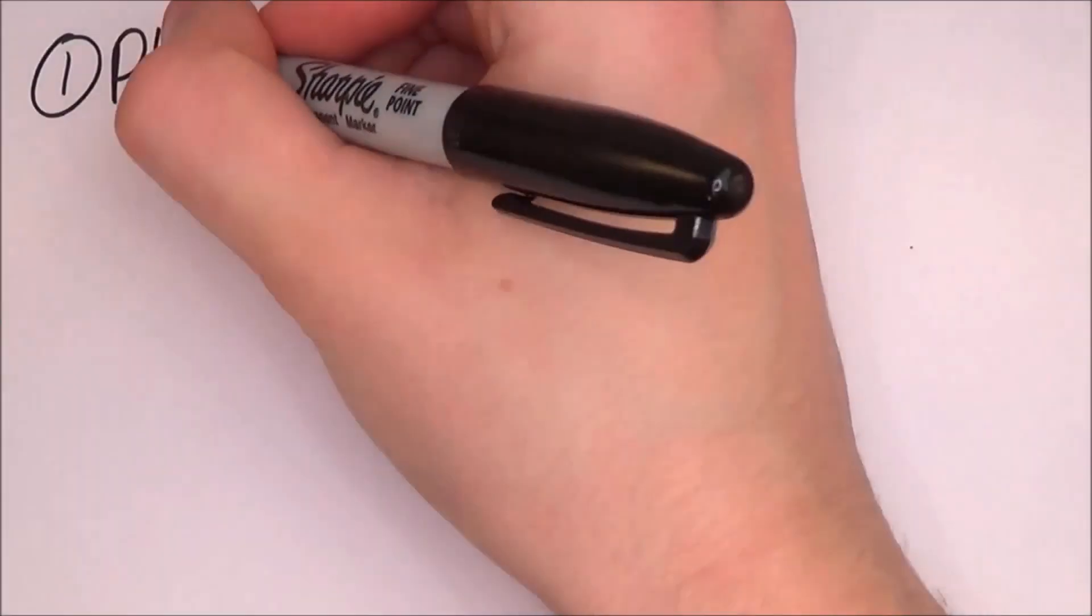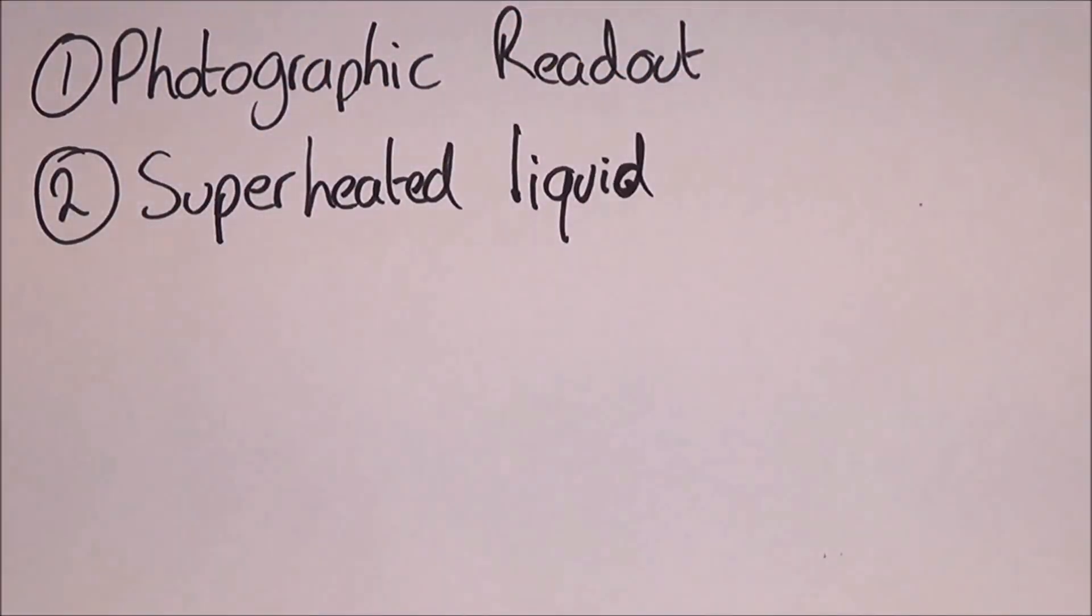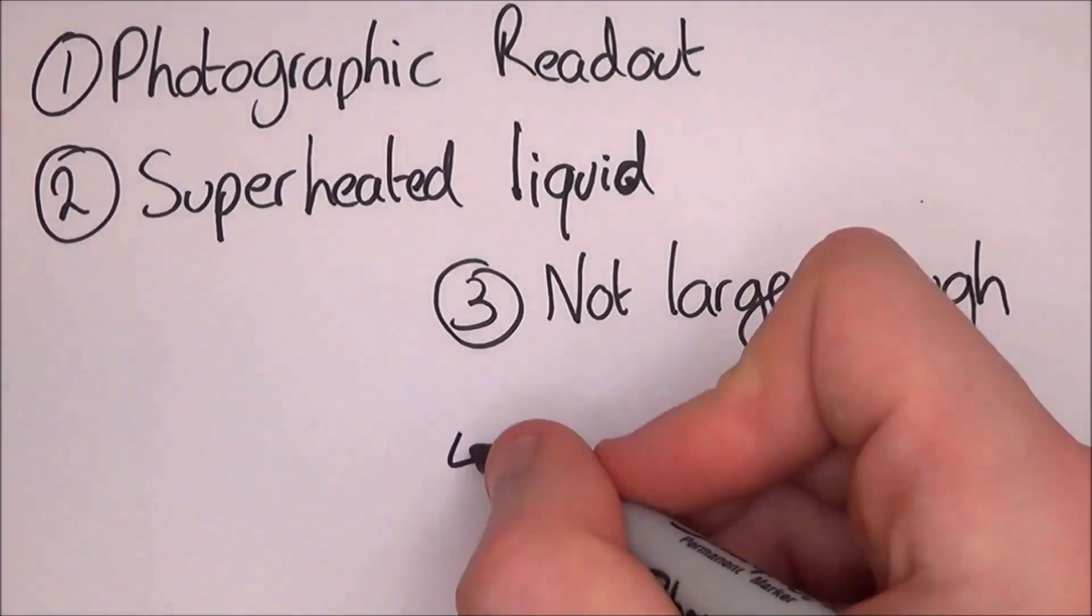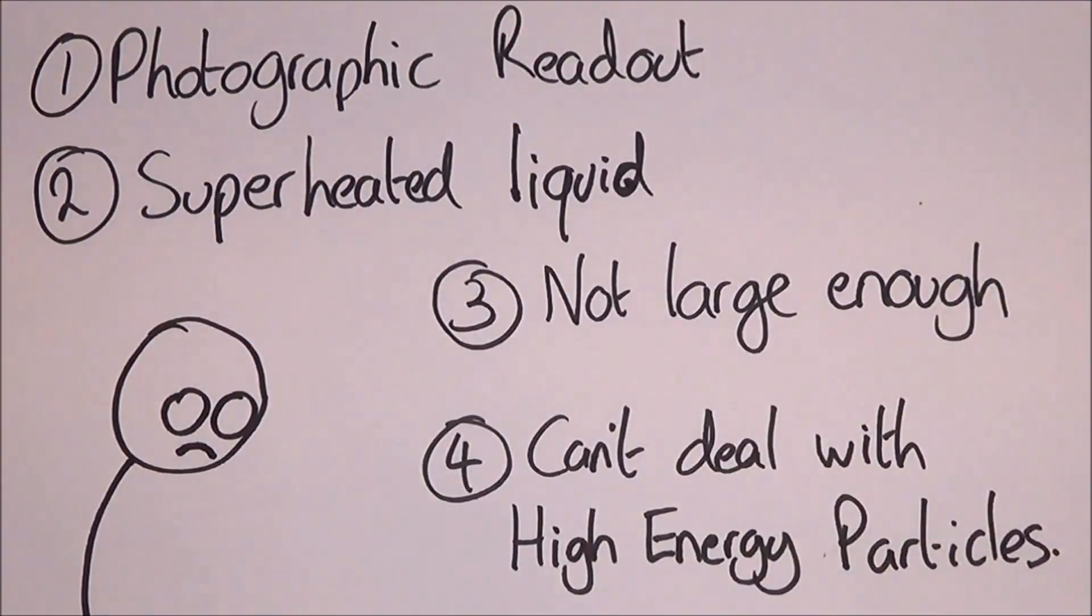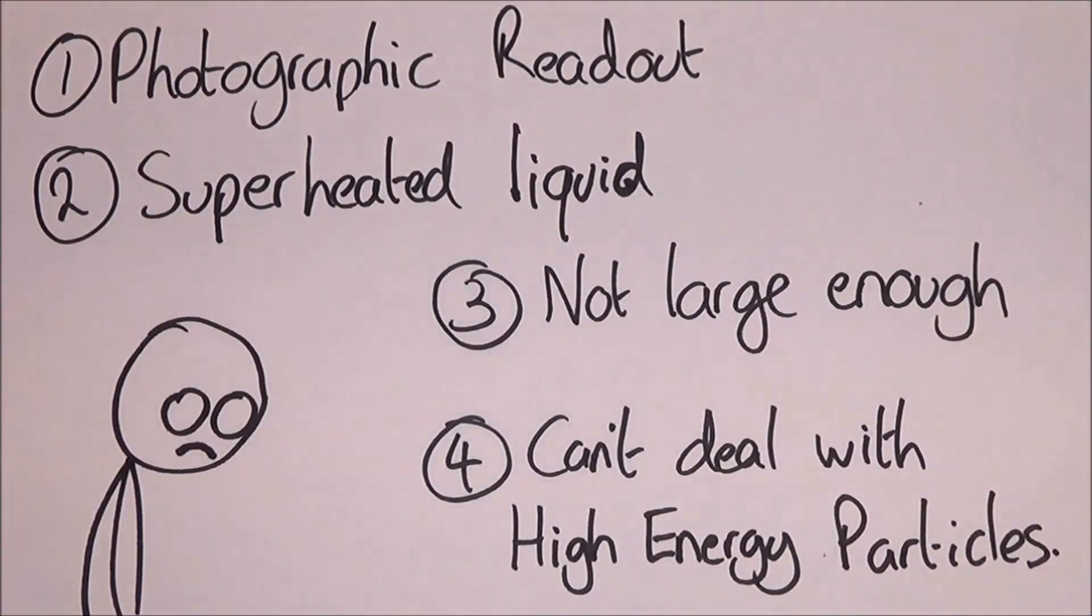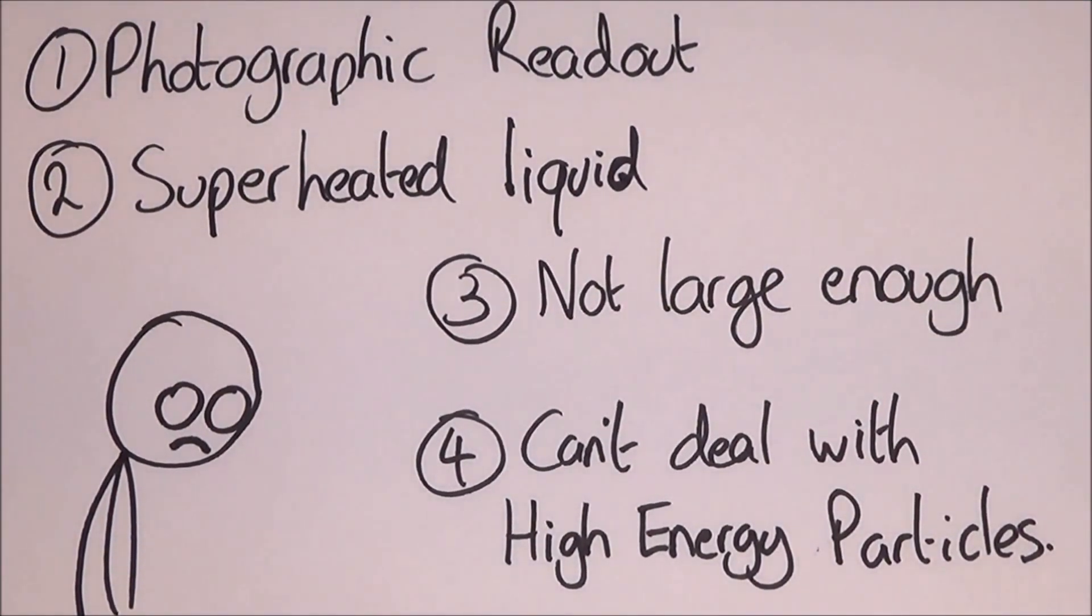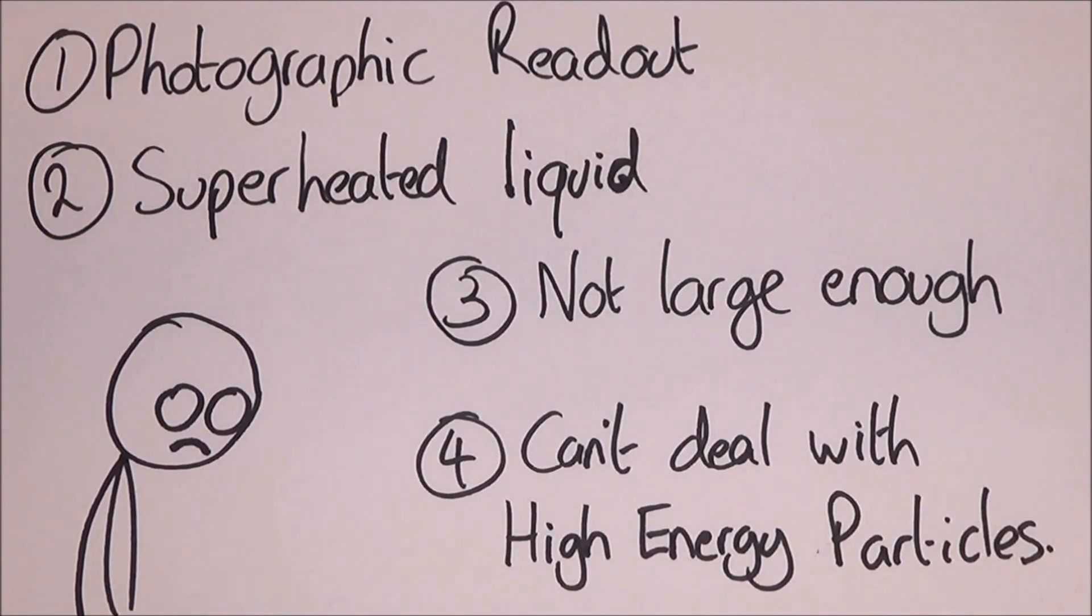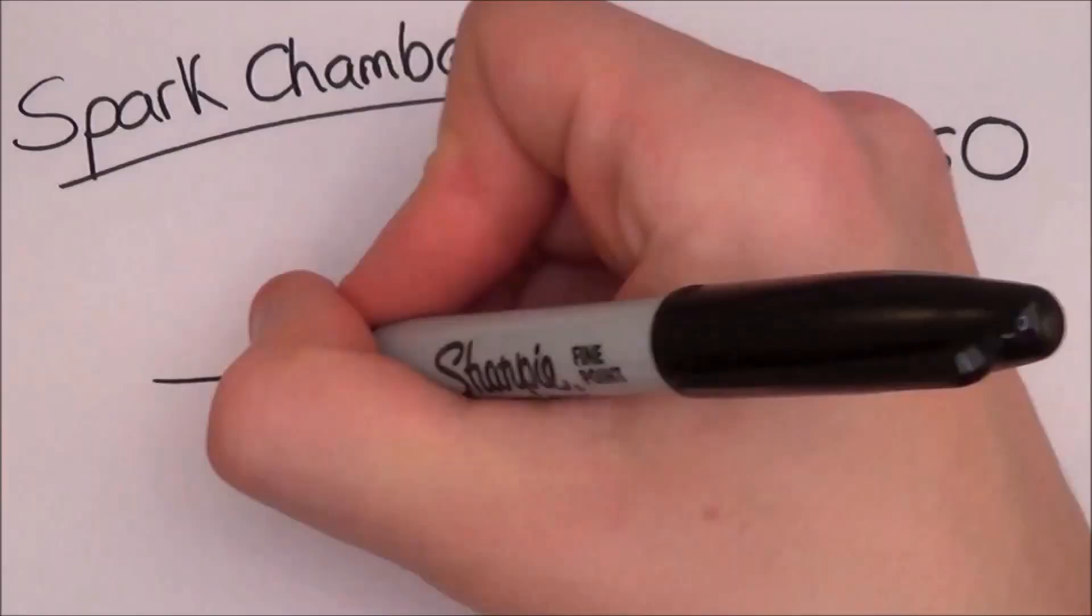Of course, the bubble chamber is not without its drawbacks. Its four main drawbacks are: it requires a photographic readout, which makes it awkward to repeat; the superheated liquid must be ready at the precise moment of collision; they are not large enough to analyze high energy particles; and any high energy particles that are made normally have too large a path to allow measurements. So nowadays, bubble chambers have been replaced by wire chambers or spark chambers.